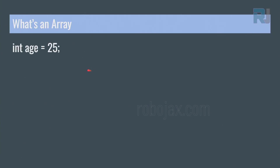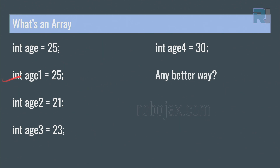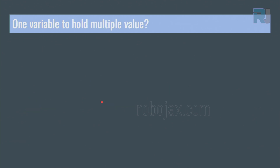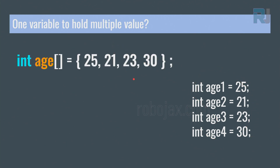First, let's see what an array is. If you want to define, say, age = 25, but you realize you want multiple ages — age1 = 25, age2 = 21, age3 = 23, age4 = 30 — is there a better solution? Is there one variable that holds multiple values? The answer is yes, and it's called an array.